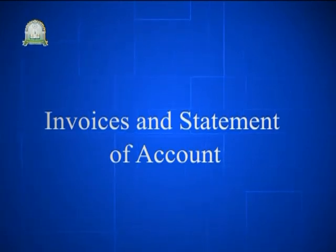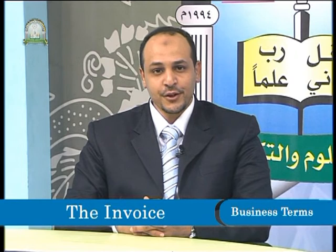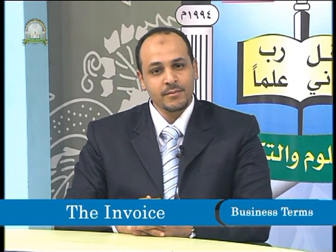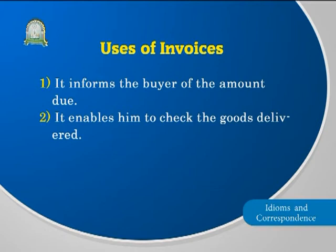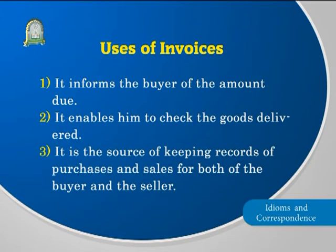Our last point in this lesson is about invoices and statements of account. The invoice is a detailed list of goods purchased, showing their nature, quantity, price, and terms of sales and delivery. The invoice serves as a document sent by the seller to the buyer requesting payment for goods supplied. It can be sent together with the goods or separately later. The invoice achieves three general purposes: one, it informs the buyer of the amount due; two, it enables him to check the goods delivered; three, it is the source of keeping records of purchases and sales for both buyer and seller.